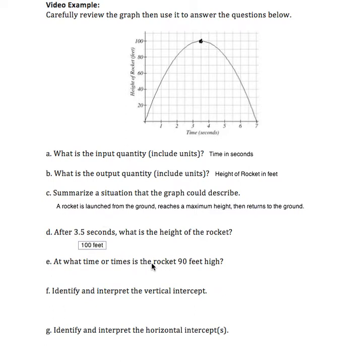At what time or times is the rocket 90 feet high? I'm going to look for 90 feet on the vertical axis, and then plot the points where the graph crosses that height—about here and here. That's at about 2.5 and 4.5 seconds. Notice there are two separate times when the rocket is 90 feet high: 2.5 seconds and 4.5 seconds.